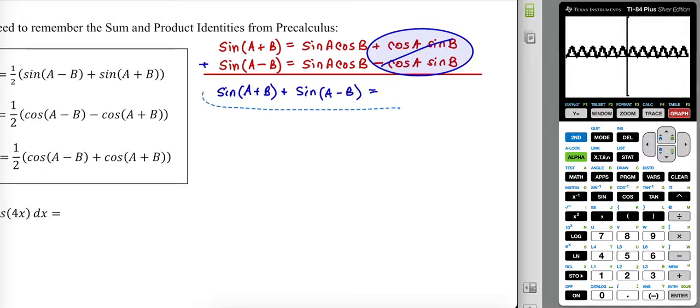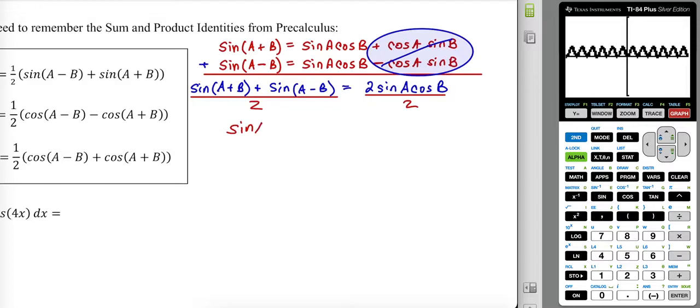And so what we would have is one sine a cosine b plus another sine a cosine b, so two of those sine a cosine b. So now if I want to just find out what sine a cosine b is, I could just divide both sides by two. In which case we would arrive at a fresh new rule.